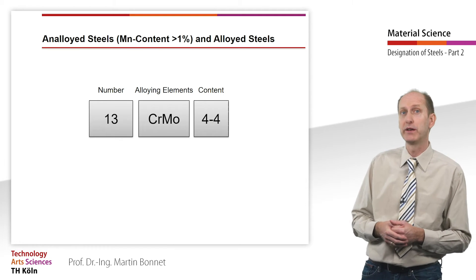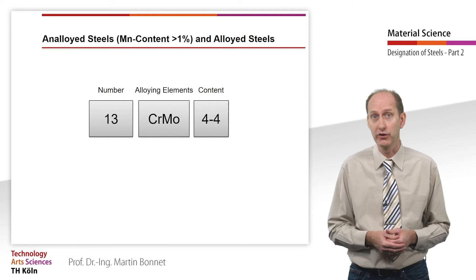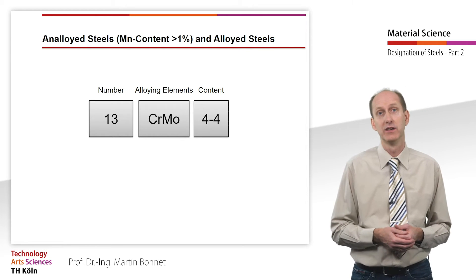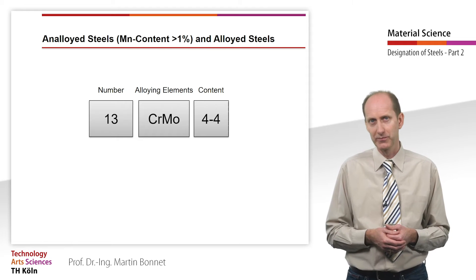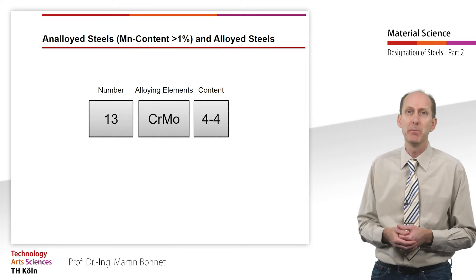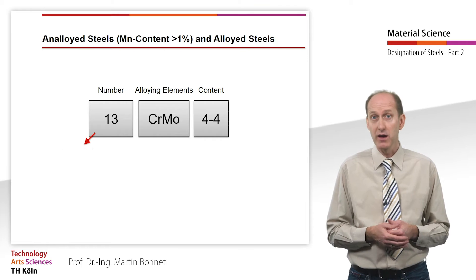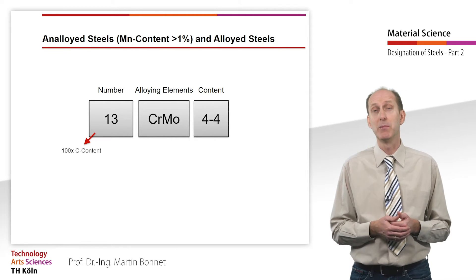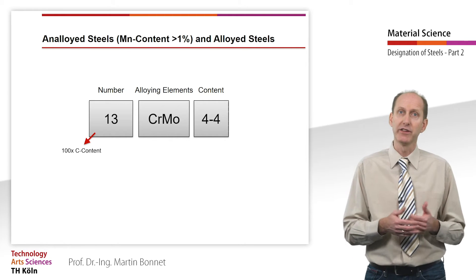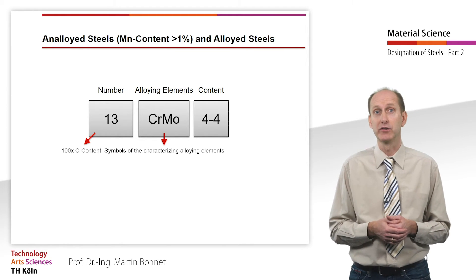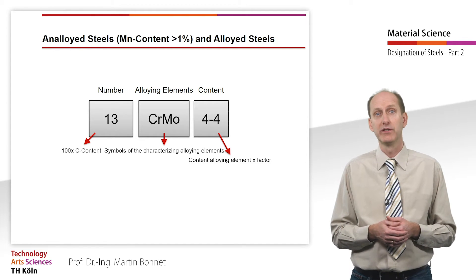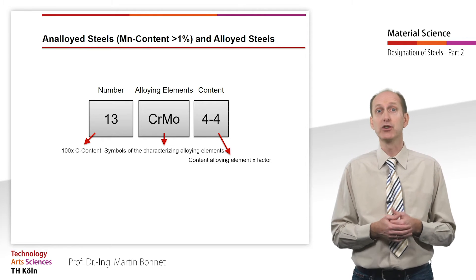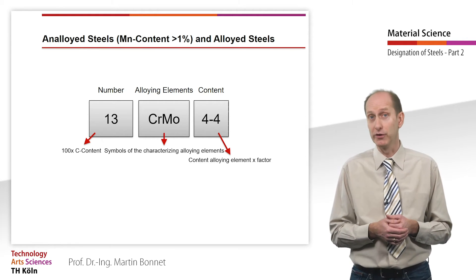Next we will look at both subcategory 2, unalloyed steels with a manganese content of more than 1%, and subcategory 3, alloyed steels, because they are subject to the same rules. The steel names are made up of the following principal symbols: a number that equals the average carbon percentage content multiplied by 100, followed by symbols for the alloying elements characterizing the steel, and numbers separated by hyphens that correspond to the average content of the elements multiplied by certain factors.